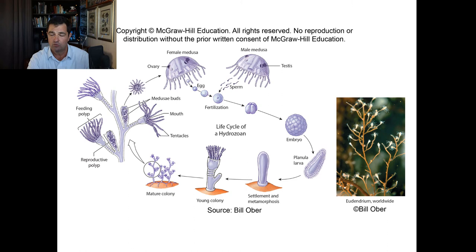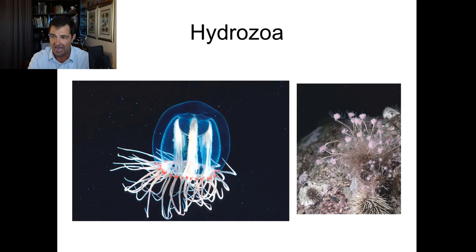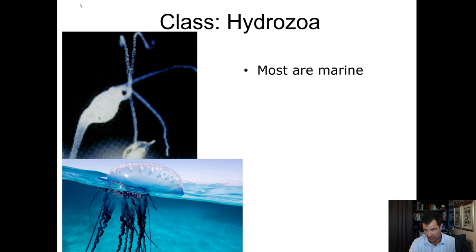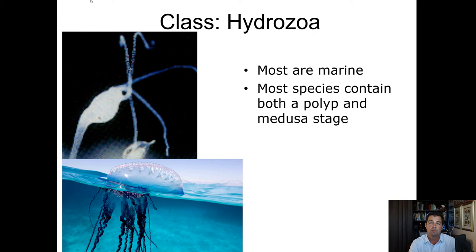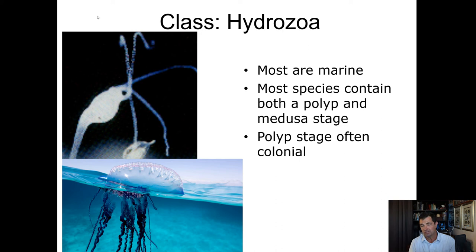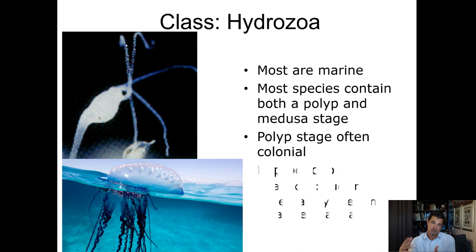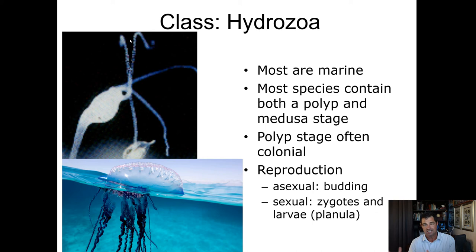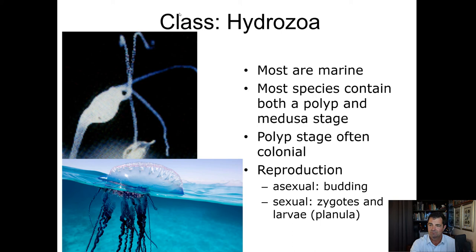The first class is called Hydrozoa — so the phylum is Cnidaria and this class is Hydrozoa. Hydrozoans are almost all entirely marine. Most species contain both a polyp and a medusa stage. The polyp stage is often colonial — a bunch of individual animals that live together, kind of like a neighborhood. They reproduce asexually by budding, meaning they copy cells and grow another individual. They also reproduce sexually, making sperm and eggs, forming larvae that often look very different from the adults.